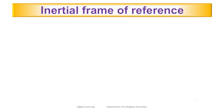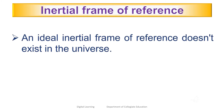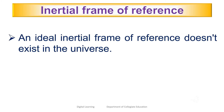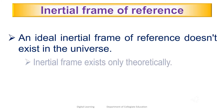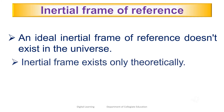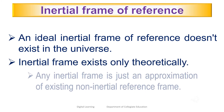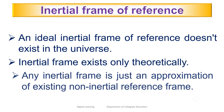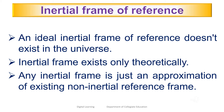It is important to know the following facts about an inertial frame. An ideal inertial frame of reference does not exist in the universe. Inertial frames exist only theoretically. Any inertial frame is just an approximation of an existing non-inertial reference frame.